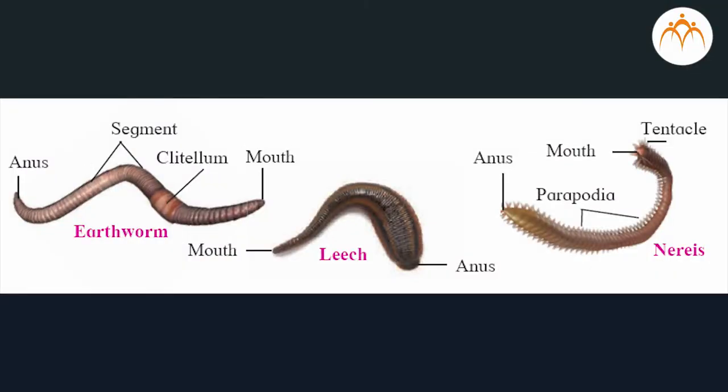Phylum Annelida: the body of these animals is long, cylindrical and metamerically segmented. Most of these animals are free-living, but few are ectoparasites. Free-living animals may be marine or freshwater dwellers or terrestrial. These animals are triploblastic, bilaterally symmetrical, and eucoelomate. They have setae, parapodia, or suckers for locomotion. Their body is covered with a special cuticle.